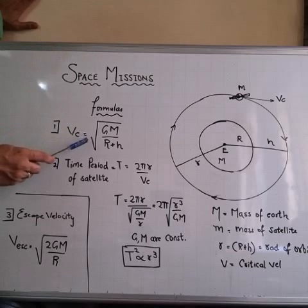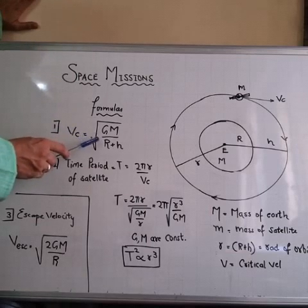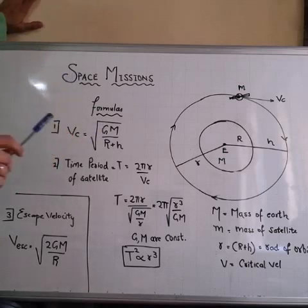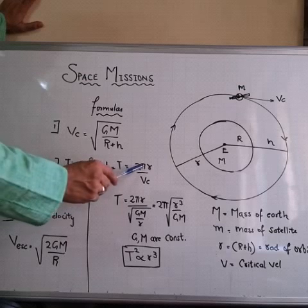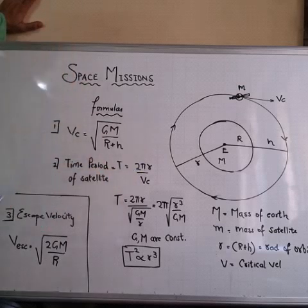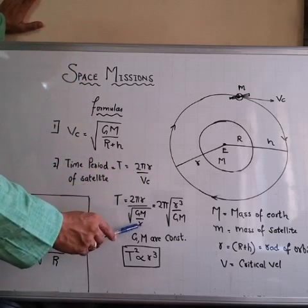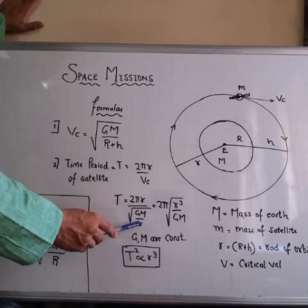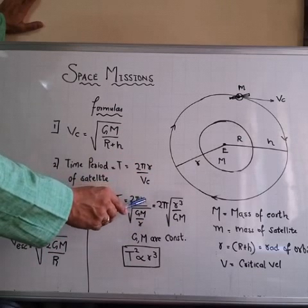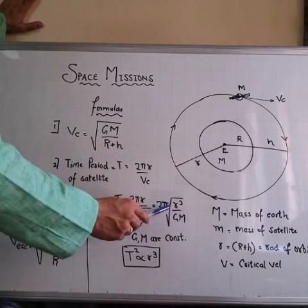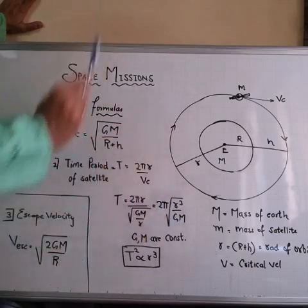The first formula is critical velocity given by Vc equal to square root of GM upon r plus h. The time period of a satellite is T equal to 2πr upon Vc, or 2π times square root of r upon GM upon r, which simplifies to 2π times square root of r cubed upon GM.